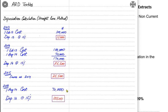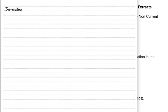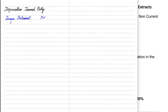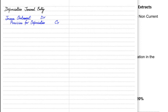Now let us make a provision account. Before that, I need to explain the journal entry for depreciation. Depreciation is an expense, so the income statement would be debited. Instead of crediting the machine account directly, we make a separate account called provision for depreciation. Provision for depreciation, also known as accumulated depreciation, is basically a contra asset — similar to provision for doubtful debt which reduces the value of debtors.